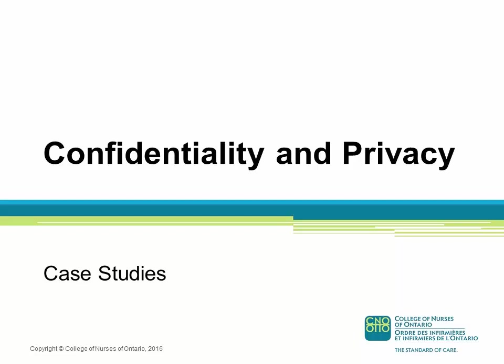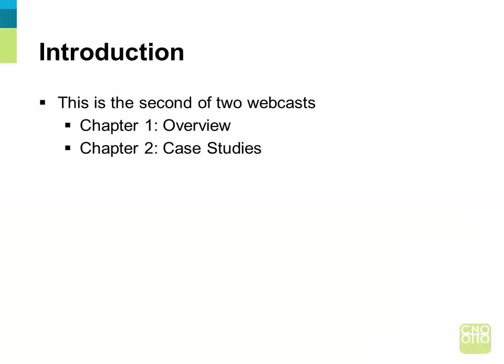The College of Nurses of Ontario presents Confidentiality and Privacy: Case Studies. This presentation is the second of two webcast chapters about privacy and confidentiality. The first chapter was an overview of your obligations and accountabilities related to maintaining the privacy and confidentiality of clients' personal health information. In this chapter, we will review some case studies and reflect on how to apply the concepts we learned in the first chapter to situations that could result in privacy breaches.